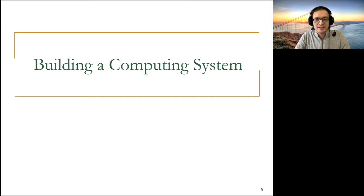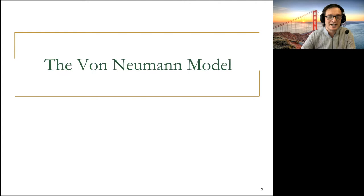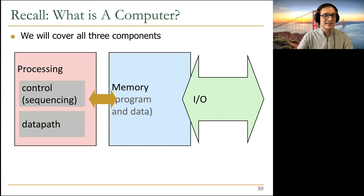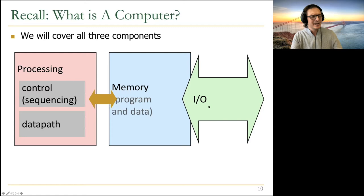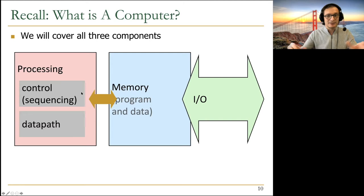Before I define the von Neumann model, let me show you a picture from an earlier lecture. A computer basically consists of three components: processing, memory, and I/O. This is heavily influenced by the von Neumann model, as we will see. We will cover all three components in these lectures, and today is where we will go into this high-level picture of the computer and make it a little bit more detailed.